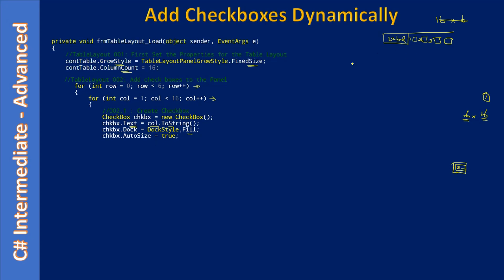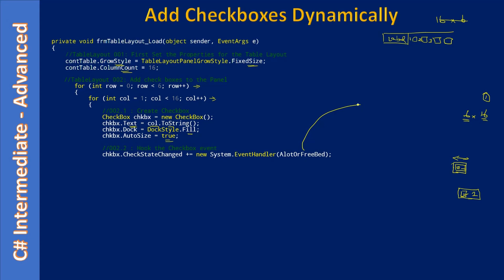The checkbox and its label get filled inside each cell. After that we set checkbox.AutoSize to true, so the cell may expand to fit the label as well as the checkbox. The AutoSize property takes care of how much size is required for one cell. Next we create an event handler — AlotOrFreeBed — though this event handler is not yet created. We will create a dummy implementation here and provide the actual implementation in the next video.